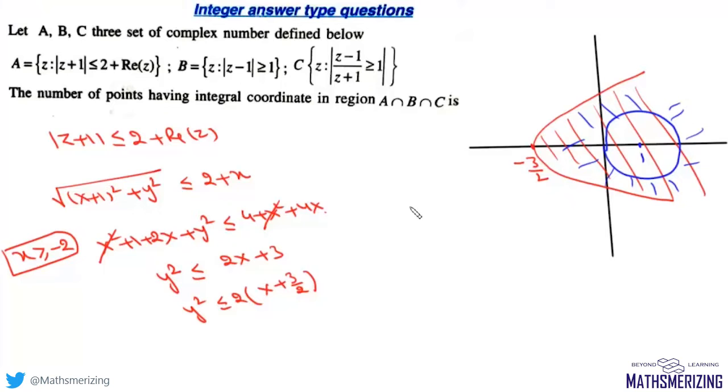Finally, we have this last result where mod of z - 1 is greater than or equal to mod of z + 1. That is (x-1)² + y²